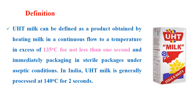Let us understand the definition of UHT processing. UHT milk can be defined as a product obtained by heating milk in a continuous flow to a temperature in excess of 135 degrees Celsius for not less than one second, and immediately packaging in sterile packages under aseptic conditions. In India, UHT milk is generally processed at 140 degrees Celsius for two seconds.